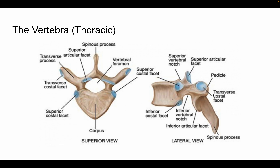The spinous process points downward on thoracic vertebrae — most thoracic vertebrae point down at a very steep angle. That's how you can identify that a vertebra is likely thoracic.